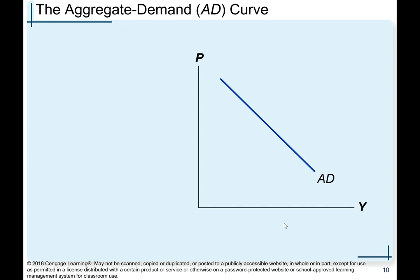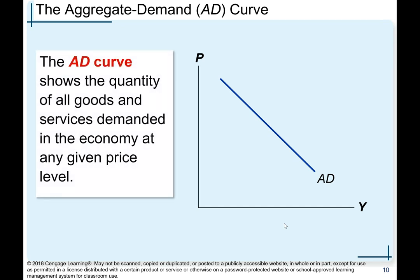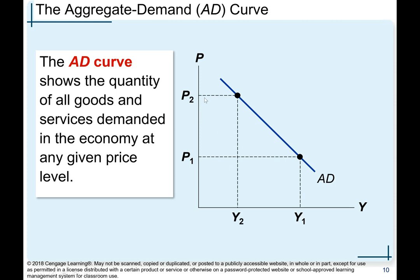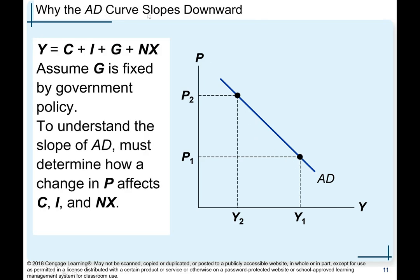The aggregate demand curve shows the quantity of all goods and services demanded in the economy at any given price level. At price P1 there is a corresponding output Y1; at P2 there is Y2. Why does the aggregate demand curve slope downwards? Using the identity Y = C + I + G + NX, we assume G is fixed by government. To understand the slope, we must determine how a change in price affects consumption, investment, and net exports.